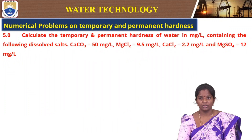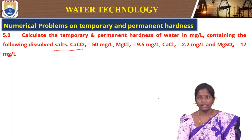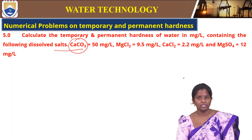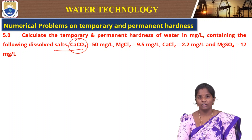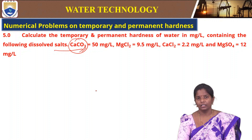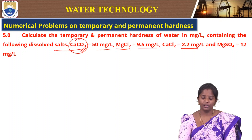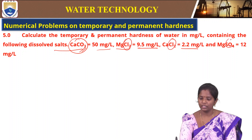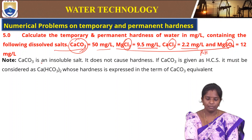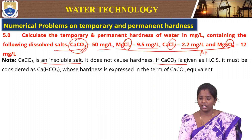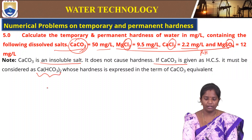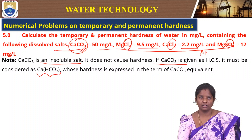Calculate temporary and permanent hardness in mg per liter containing: calcium carbonate 50 mg/L, magnesium chloride 9.5 mg/L, calcium chloride 22.2 mg/L, and magnesium sulphate 12 mg/L. Carbonates and bicarbonates are both temporary-hardness-causing salts — carbonates are ultimately converted to bicarbonate. Calcium carbonate is an insoluble salt and does not cause hardness itself, but if given as a hardness-causing salt it must be considered as bicarbonate and expressed as calcium carbonate equivalent.